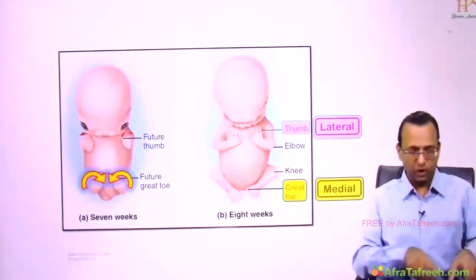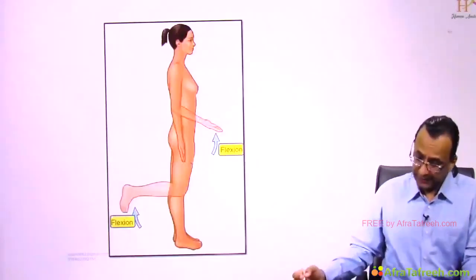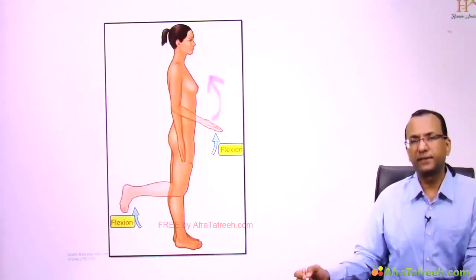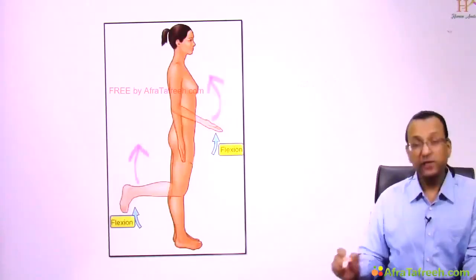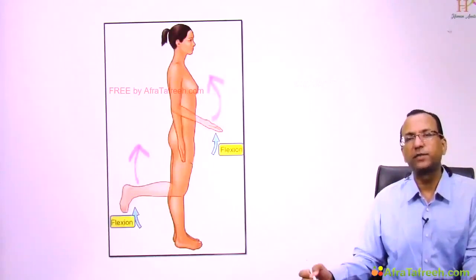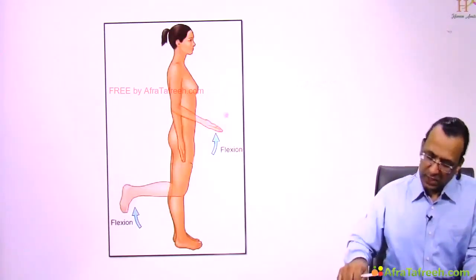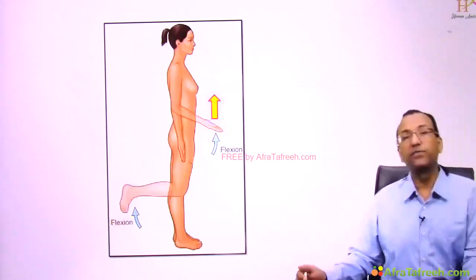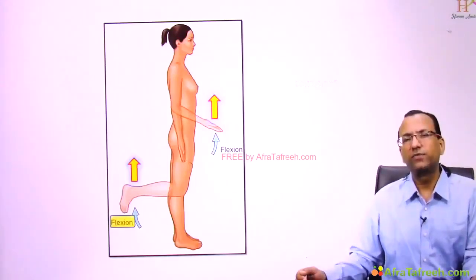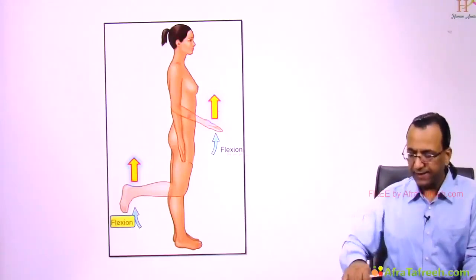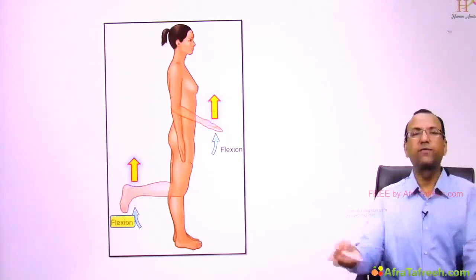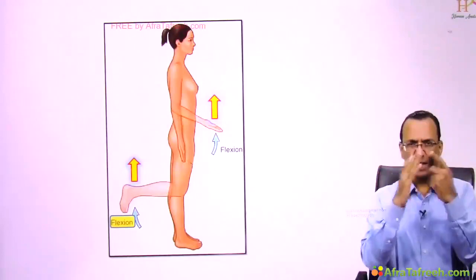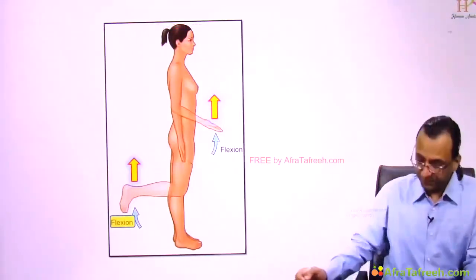A diagram shows that upper limb flexors fold anteriorly while lower limb flexors are posterior. This difference occurs because of limb rotation — there is a 180-degree difference between them: 90 degrees lateral rotation for the upper limb plus 90 degrees medial rotation for the lower limb equals 180 degrees total difference.